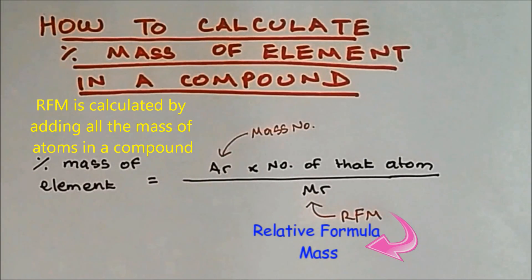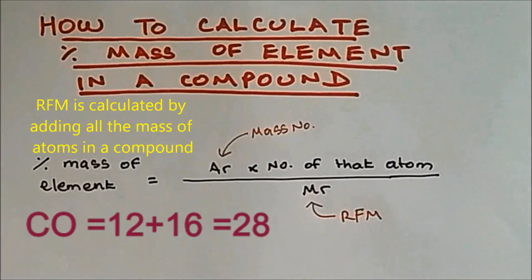The relative formula mass can be found by adding all the mass of the atoms in a compound. If you take a look at carbon monoxide, the MR of carbon monoxide will be 28 because the AR of carbon is 12 and the AR of oxygen is 16. When you add them together you get 28, and this is how you find MR.